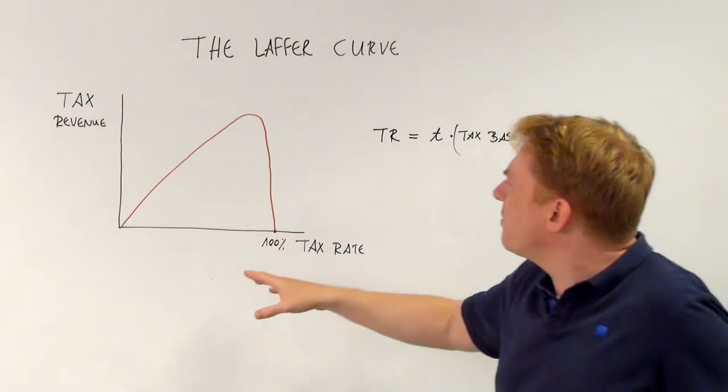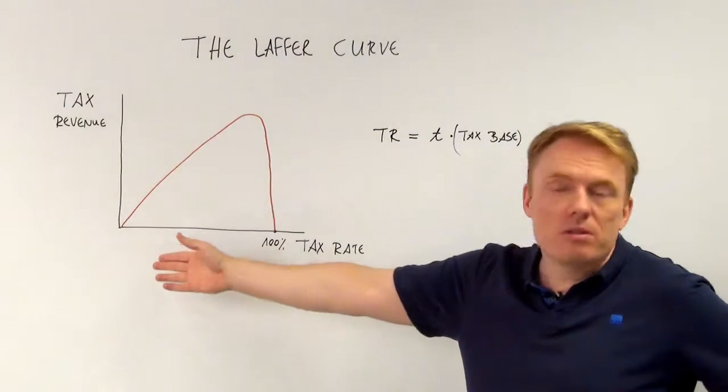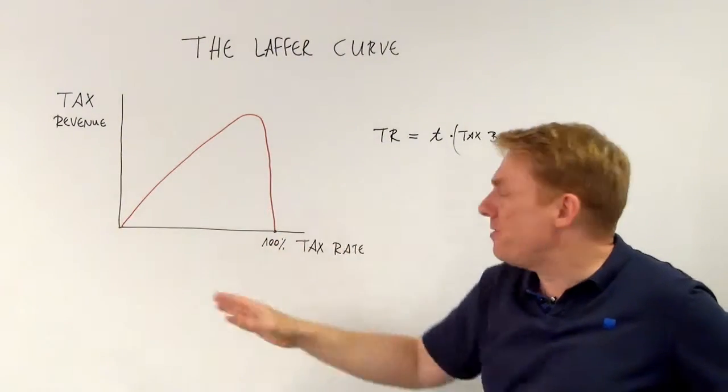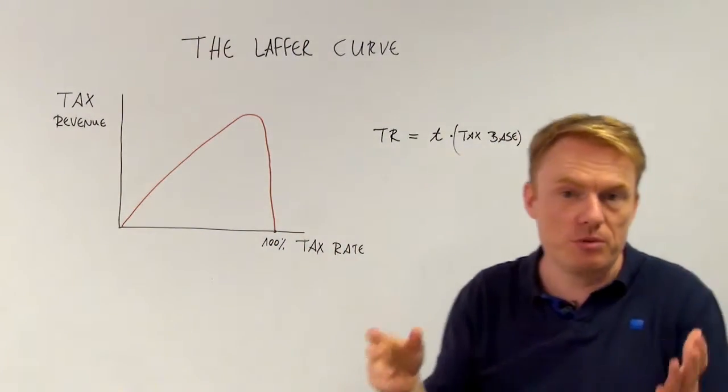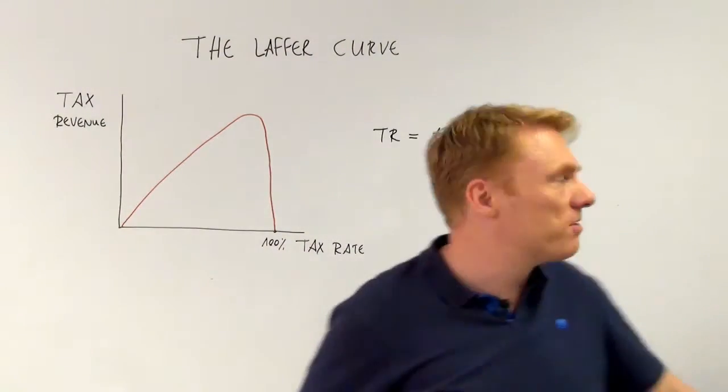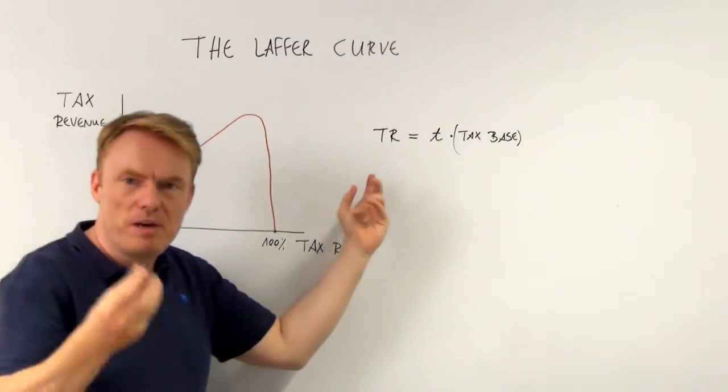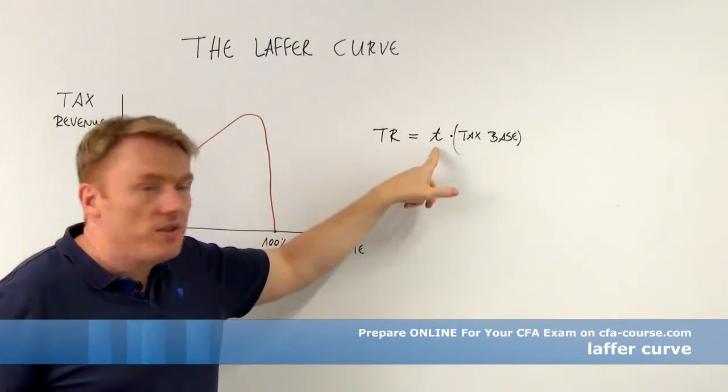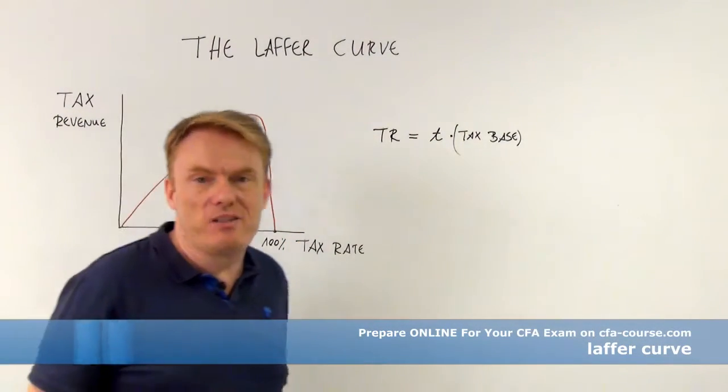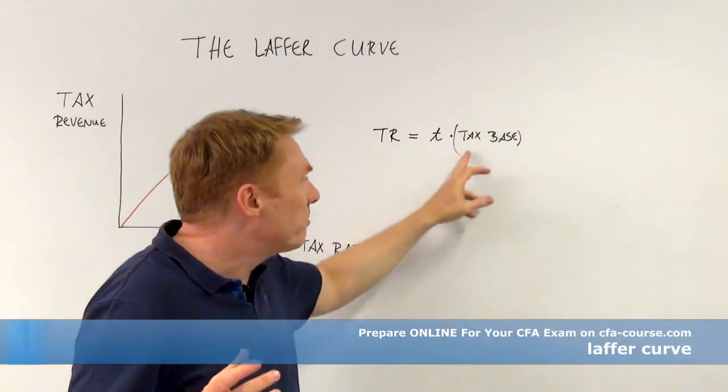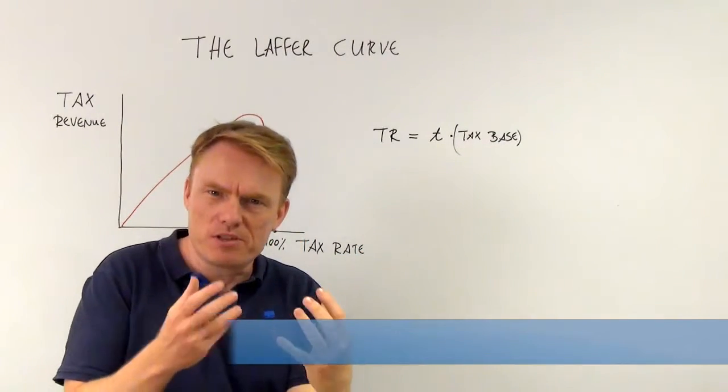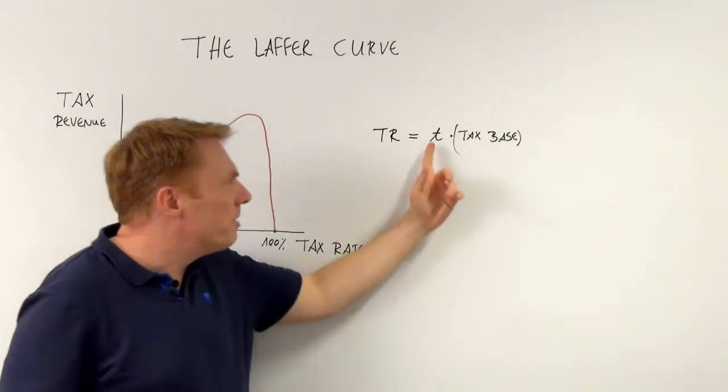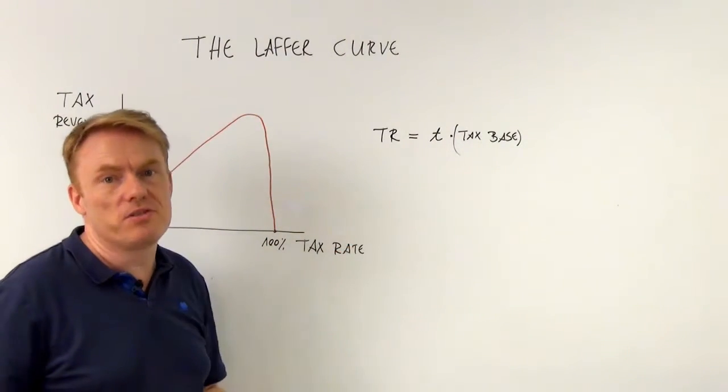The Laffer curve indicates that there is a relationship between tax revenue and tax rate. Tax revenue, the amount of money government gets, is tax rate multiplied by tax base. So the tax base, the income that is earned by people, multiplied with the tax rate equals tax revenue.